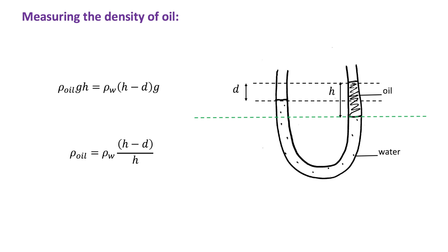The following arrangement can be used to measure the density of oil. Oil is added to a tube containing water; by symmetry, the water columns below the reference level are in balance, so we need to balance the oil column with the remaining column of water. In equilibrium, p₀ + ρ_oil × g × h = p₀ + ρ_water × g × (h − d). Solving this equation gives the density of oil.